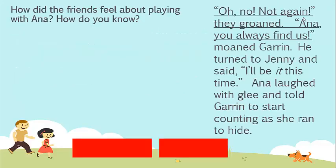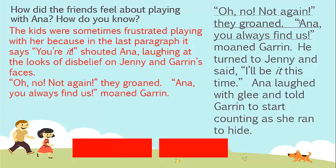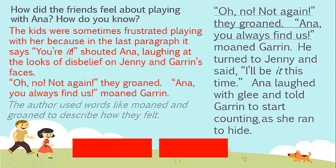How did the friends feel about playing with Anna? How do you know? Take a look at the text and see what you can find. The kids were sometimes frustrated playing with her because in the last paragraph it says, 'You're it!' shouted Anna, laughing at the looks of disbelief on Jenny and Guerin's faces. 'Oh, no, not again!' they groaned. 'Anna, you always find us!' moaned Guerin. The author used words like groaned and moaned to describe how they felt.